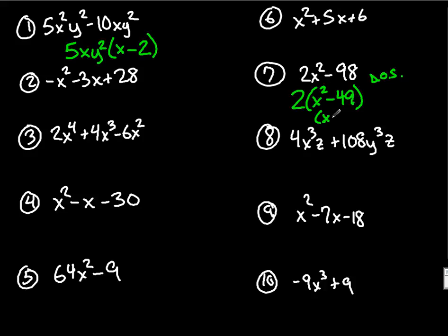The square root of x squared is x, the square root of 49 is 7. So the rule is you do an x plus 7 and an x minus 7. And don't forget the 2 that you already had out in front.